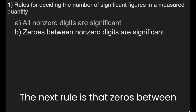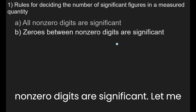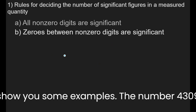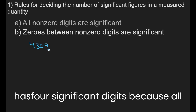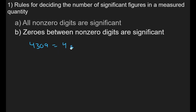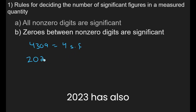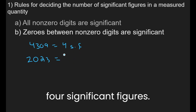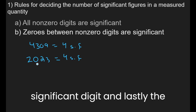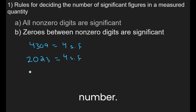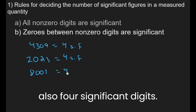The next rule is that zeros between non-zero digits are significant. The number 4309 has four significant digits because all the digits are significant. The number 2023 has also four significant figures — the zero here counts as a significant digit. And lastly, the number 8001 has also four significant digits.